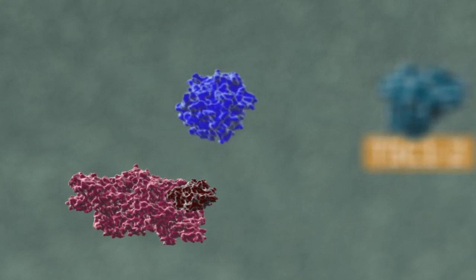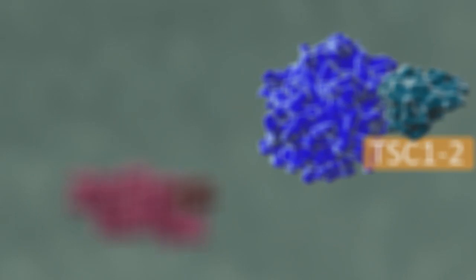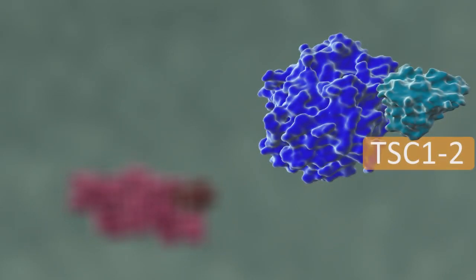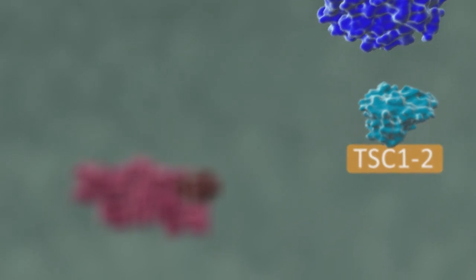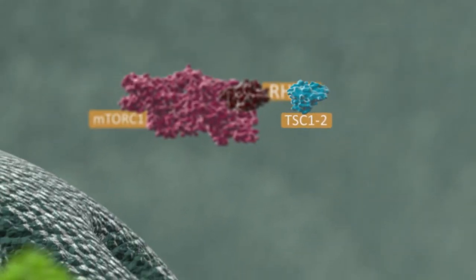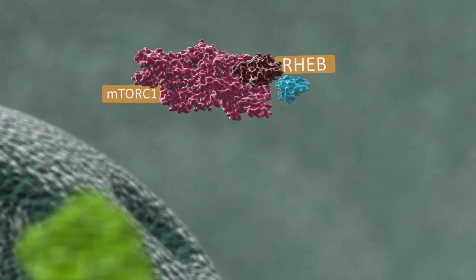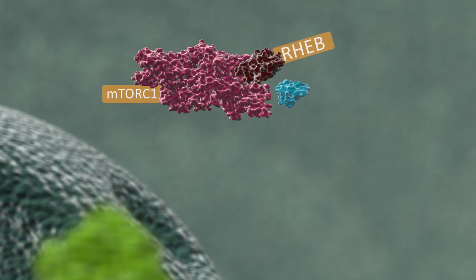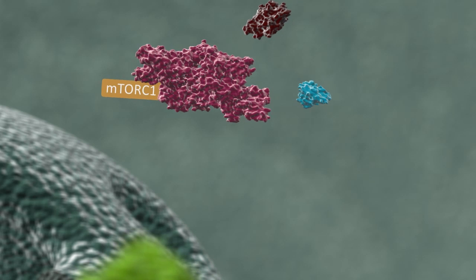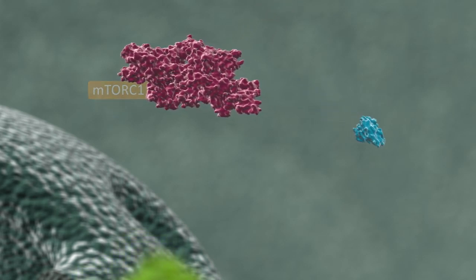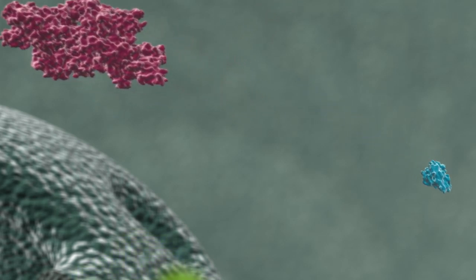Fully activated AKT is free to interact with a host of substrates. It phosphorylates and negatively regulates tuberous sclerosis complex II, or TSC2, leading to the activation of the small GTPase RAS homolog enriched in brain, or RHEB, and subsequent activation of mTORC1. Active mTORC1 can enhance cell growth and proliferation through its interaction with 4E binding protein and ribosomal S6 kinase.